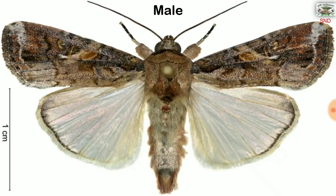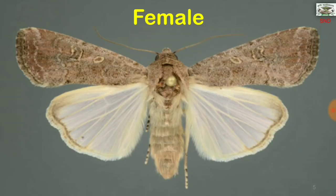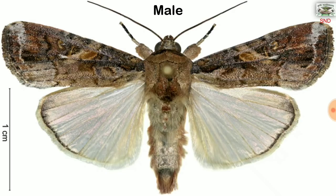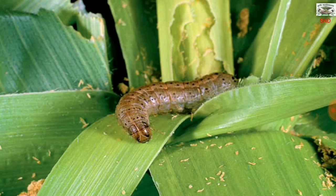You can see the male moth of Spodoptera frugiperta and the female moth. Here you can simply observe that the male and female show some dimorphism. The larvae of fall army worm are shown on a maize plant and have done remarkable damage to that plant.